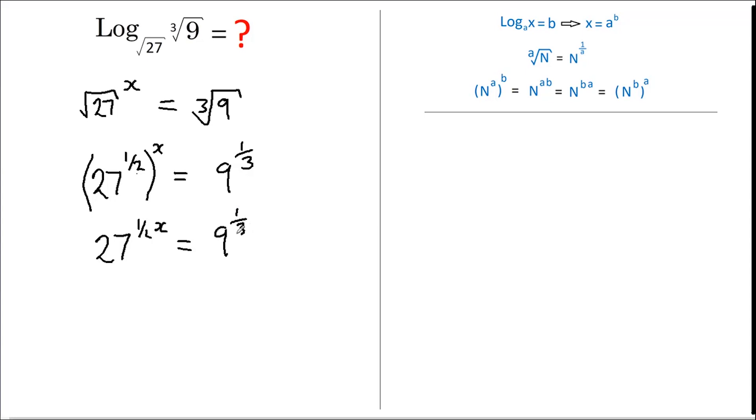Now I'm going to rewrite the 27 as 3 to the power of 3, and once again I could just multiply these together as per this rule. And this equals—I'm going to change 9 to 3 squared.